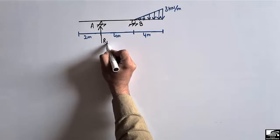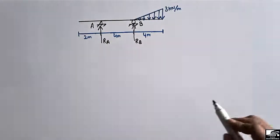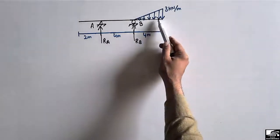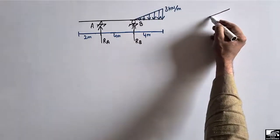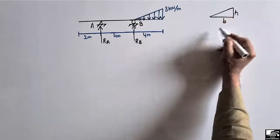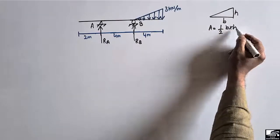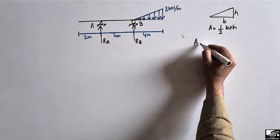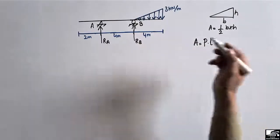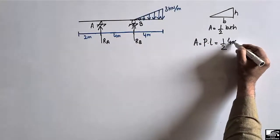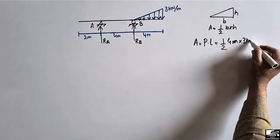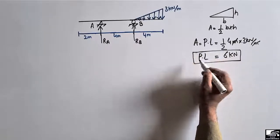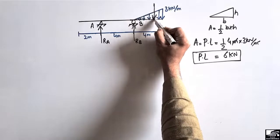The support reactions are RA and RB, both assumed to act upward. To find them, we first simplify the triangular load by converting it into a concentrated load. We find the area of the triangle using the formula: half base into height. The base is 4 meters and the height is 3 kilo Newton per meter, so the area equals half times 4 times 3, giving a concentrated load of 6 kilo Newton acting at the centroid of the triangle.